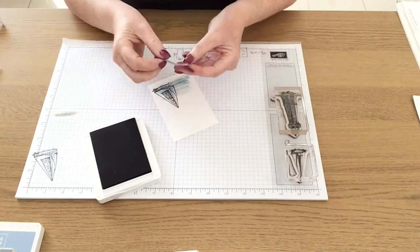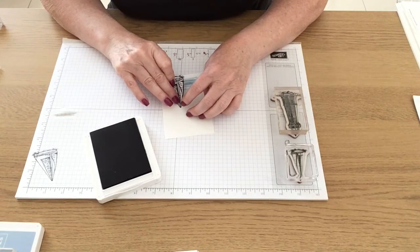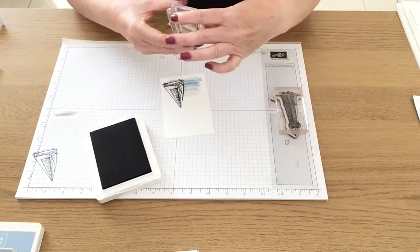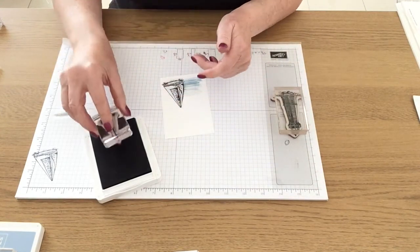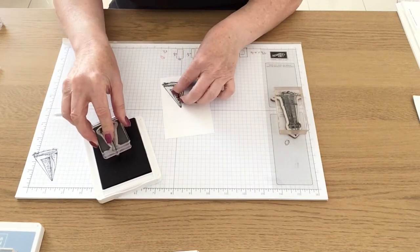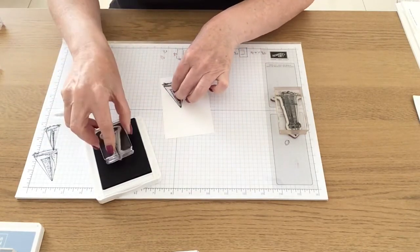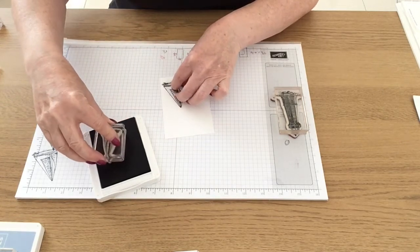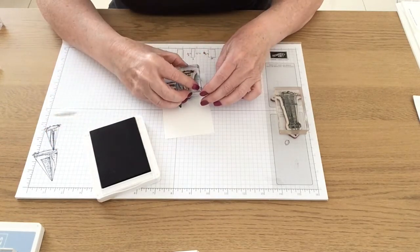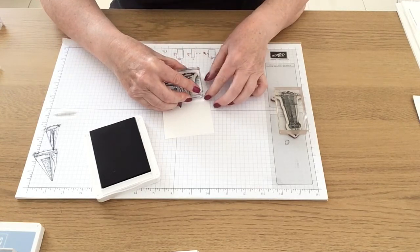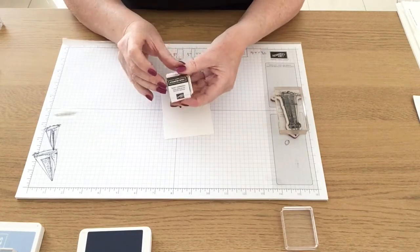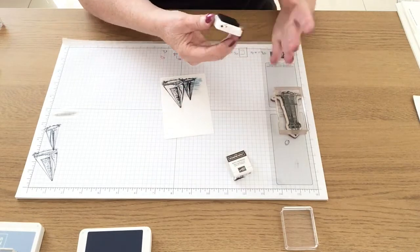I've got a mask that I've already cut using my Scan and Cut so I'm just going to place that over the big boat and again I'm going to use the Knight of Navy and this time I'm using the small boat. Again I'm just stamping off just to make sure what it looks like and then I'm going to stamp this second boat on the white card so it overlaps the bigger boat.